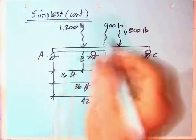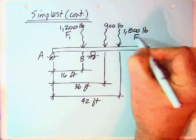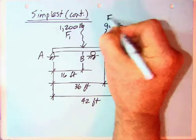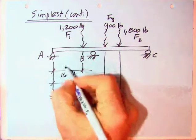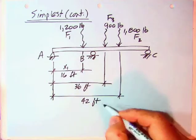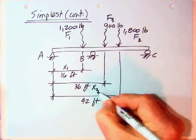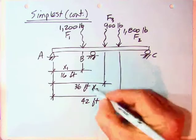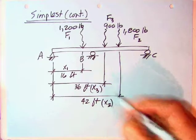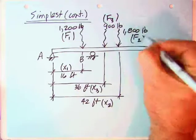Okay, here are our various forces. I think this was F1, this one was F2, this was F3. So therefore, this one is X1, the 16 feet. 42 feet is going to be our X2, and our 36 feet is going to be our X3. So each one of those, let me put those in parentheses, so easy to identify.